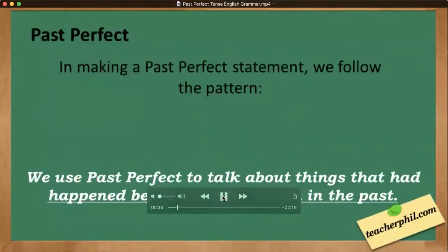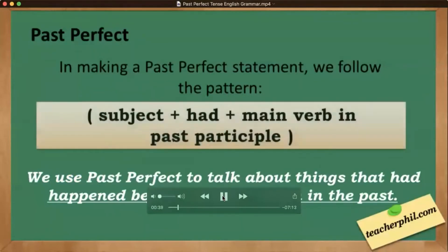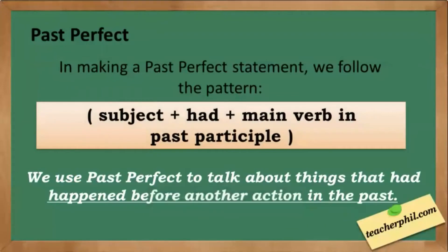In making a past perfect statement, we follow the pattern: subject plus 'had' plus the main verb in past participle. We use past perfect to talk about things that had happened before another action in the past. So look at the examples.